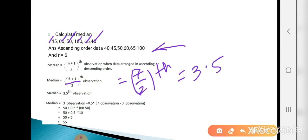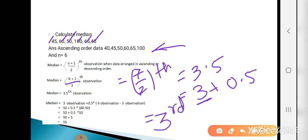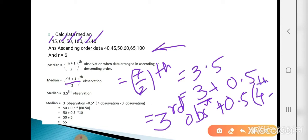How to calculate the 3.5th observation? We write 3.5 as 3 + 0.5. So the formula becomes: 3rd observation + 0.5 × (4th observation − 3rd observation). This is the method for calculating a non-integer observation position.